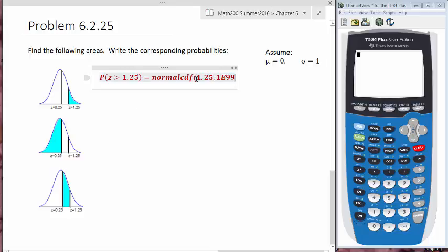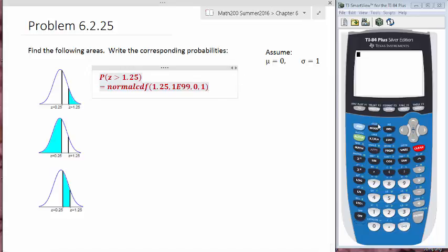So our arguments are going to be the low, the high, and then we have the mean, and in this case the mean is 0, and the standard deviation is 1. So that's what we're going to put into our calculators. Let's go to our calculators.